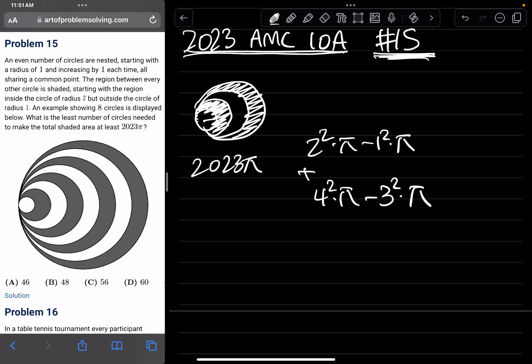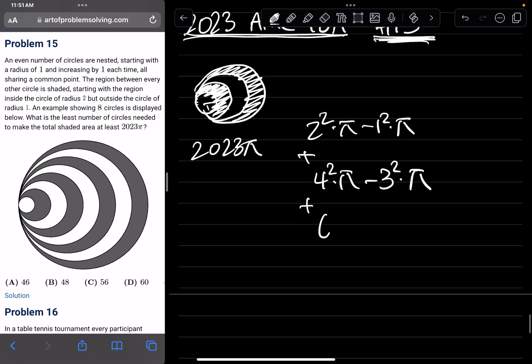Because each circle is of radius 1, right? So we increase by radius 1 each time. And the third circle that we're going to add is 6²π - 5²π.